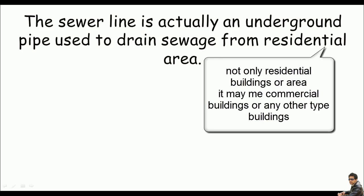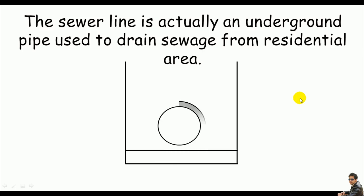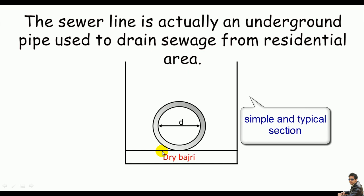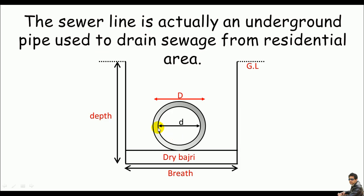There are many types of sewer pipe according to materials and cross-section, but we will not go into detail for all these types. Here we are just doing the estimation of a sewer line — a pipe with some dry bajari at the base, lean concrete, ground levels, the diameter, the depth of the trench, the breadth of the trench — this is a typical section of a sewer line.